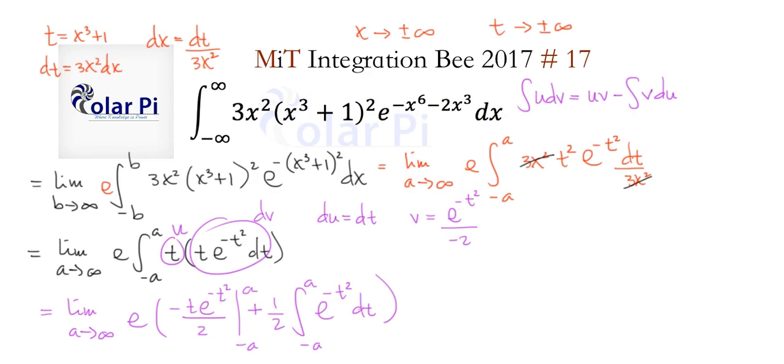If you plug in a and then negative a, it won't make a difference here because both a and negative a are going to be squared with this t squared right there. So you're going to have e to the negative a squared both when you plug in a and when you plug in negative a. The impact of that is, as a goes to infinity, they're both going to go to zero.